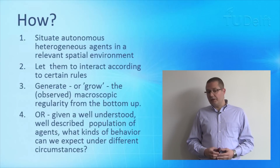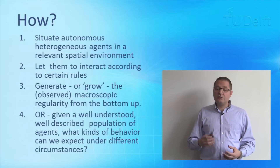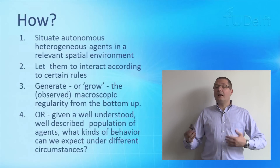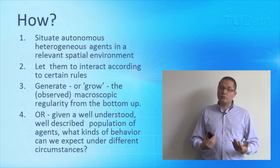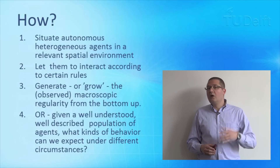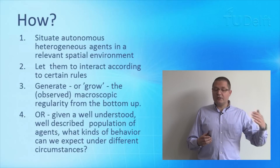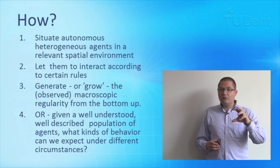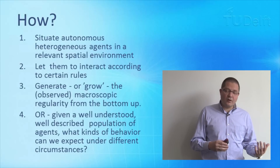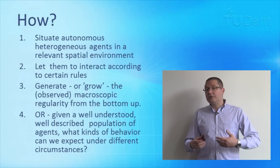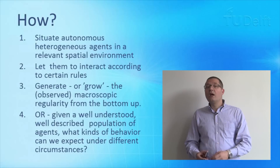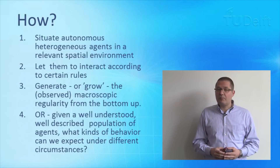It is all about the process of interaction, action and reaction of individuals giving rise to a pattern that we observe. We start by situating autonomous heterogeneous agents or entities in some kind of relevant environment — in space, a network, or whatever. We let them act, react and interact following relatively simple individual rules. These interactions generate or grow the observed macroscopic pattern we are interested in. Alternatively, if we have a collection of individuals that we understand very well, we can explore and simulate what kinds of behaviors they are capable of in the long run.